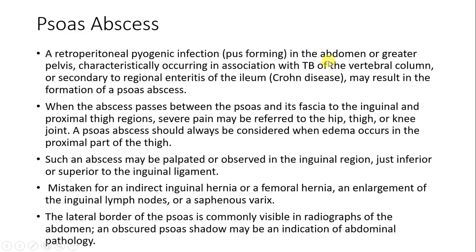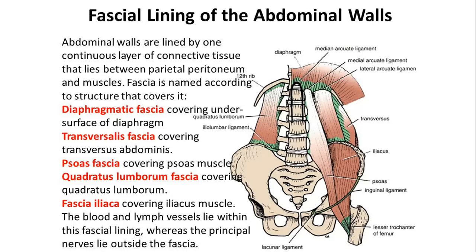It can occur in association with tuberculosis of the vertebral column, or secondary to regional enteritis of the ileum — that is Crohn's disease. The abscess can form in this region. When the abscess is between the psoas and its fascial lining, it travels to the inguinal ligament and the proximal region of the thigh, causing severe pain referred to the hip, thigh, or knee.